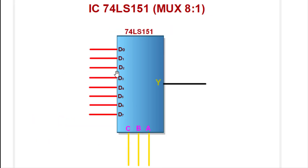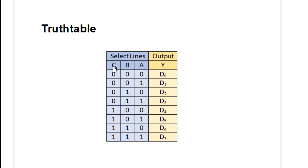This is the pinout — these are the pins we will be using in this particular simulator. At the input, the red lines from D0 to D7 are the input lines, and Y is the output. The yellow lines are the select lines, with C as the most significant. In a multiplexer, we have many inputs and a single output, so only one input can be directed to the output — which one is selected by the select lines. If all three are zero, D0 comes out; if 001 we get D1; 010 we get D2, and so on. This is the truth table, with C as the most significant and A as the least significant.